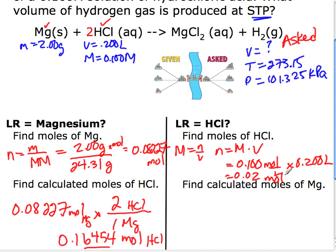But when I look over here, if I used up all this magnesium, I would need this many moles of HCl. But, I only have that many moles of HCl. So, I have way less hydrochloric acid than I actually need for the magnesium. So, I don't have enough HCl. Therefore, HCl is the limiting reactant.